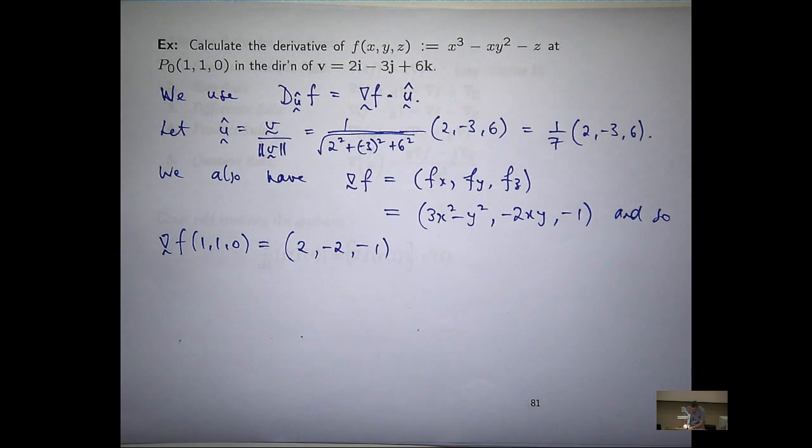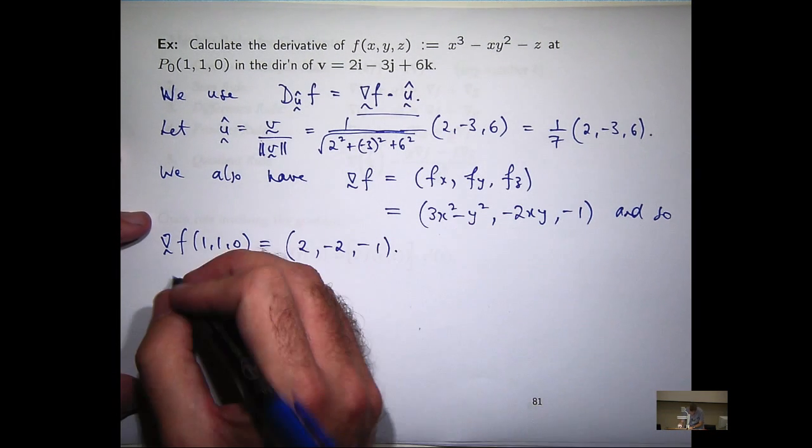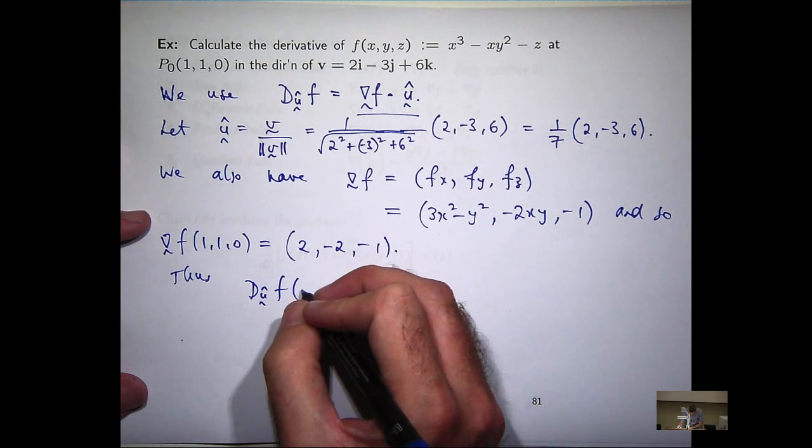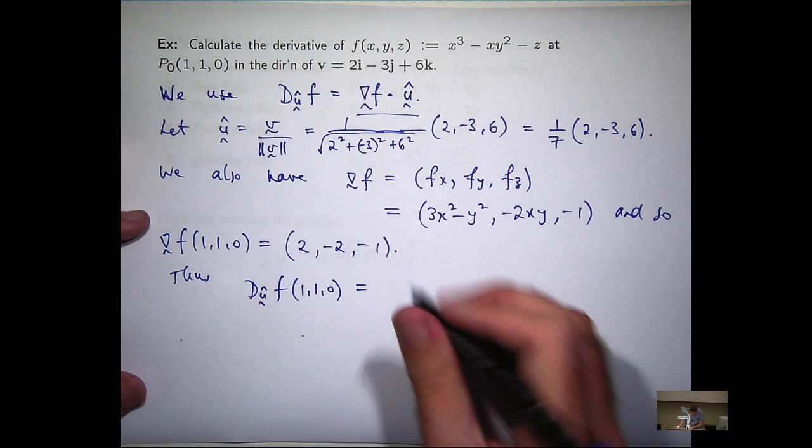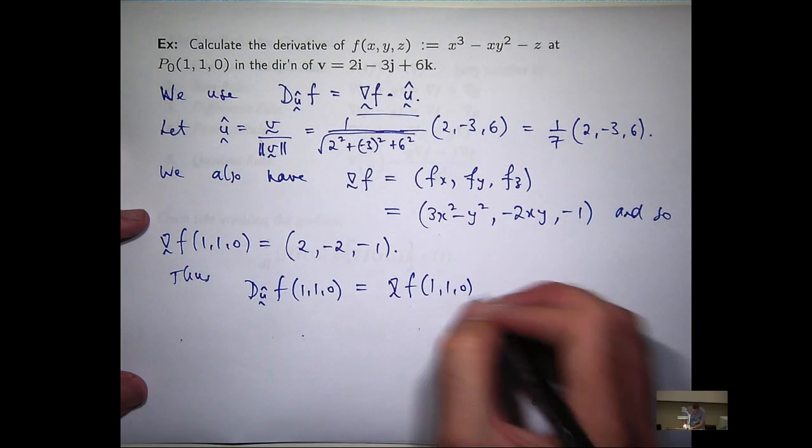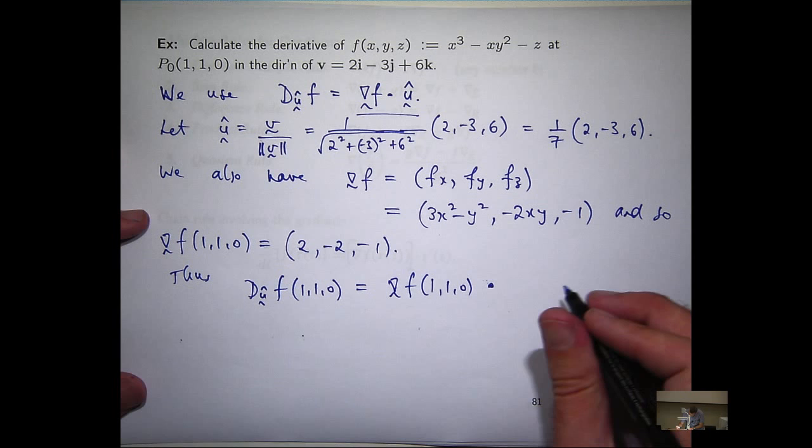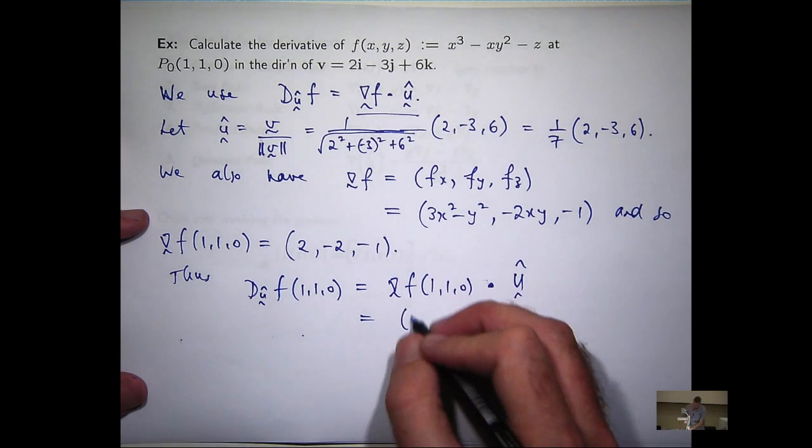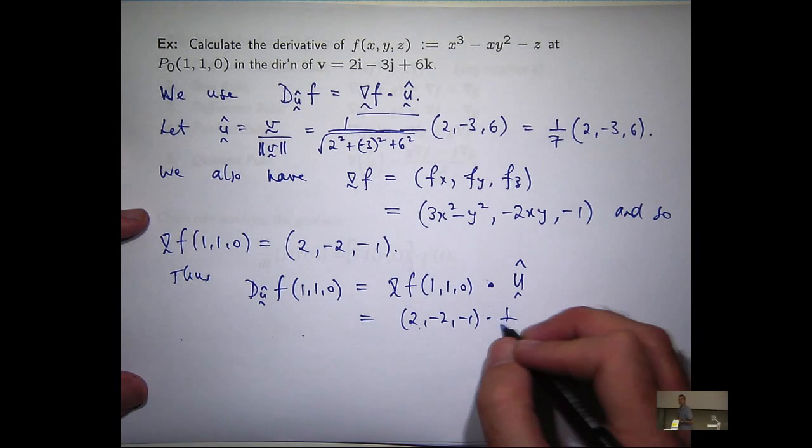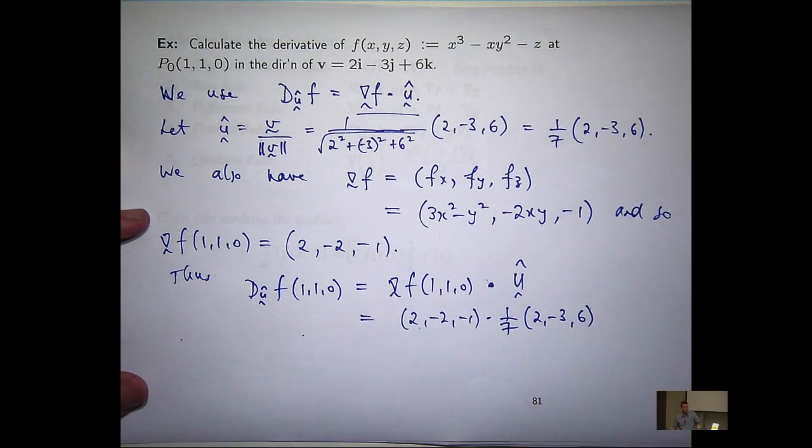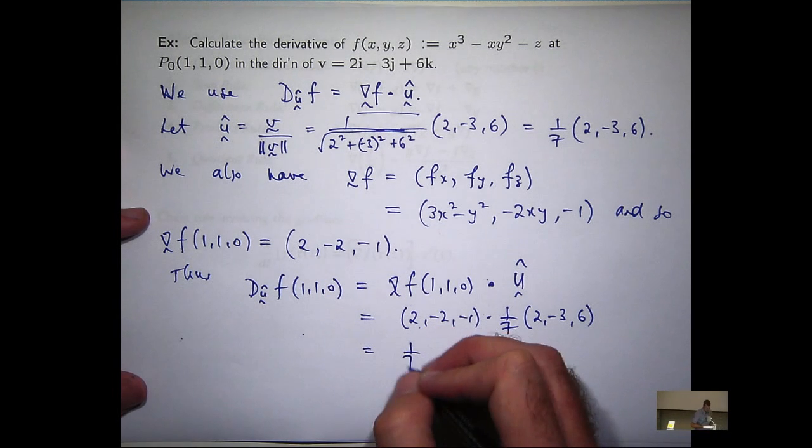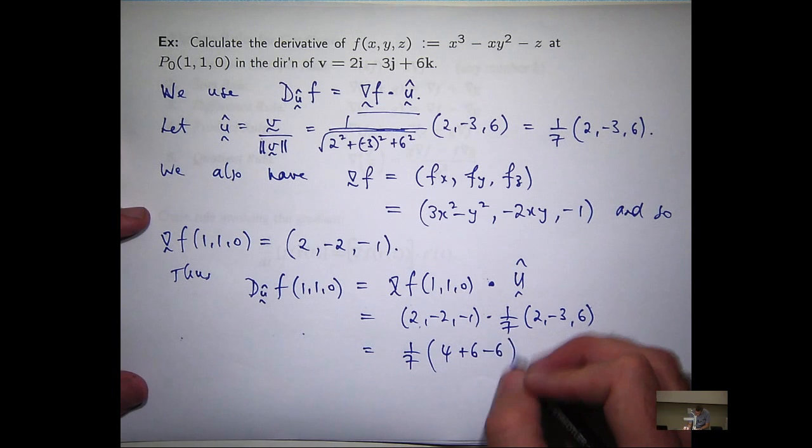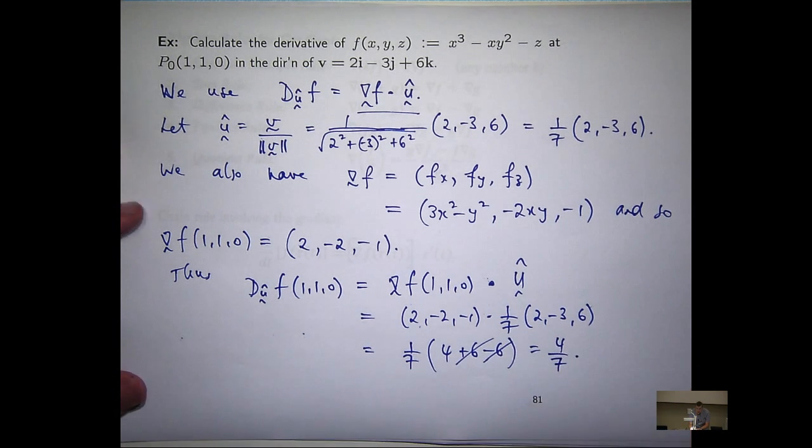So let's use this and dotted with... Just a dot product. I'm just going to bring the 1 7th out the front. So we're going to get 4 plus 6 minus 6. 4 7ths.